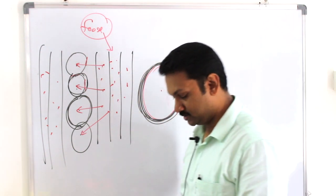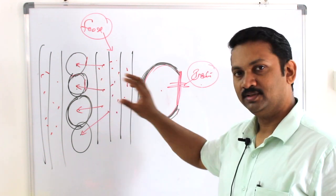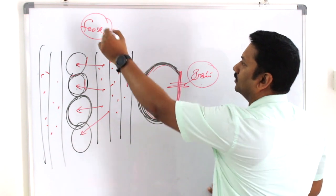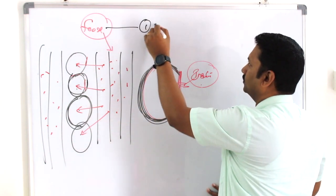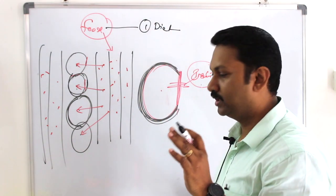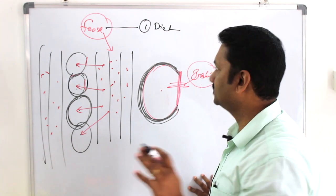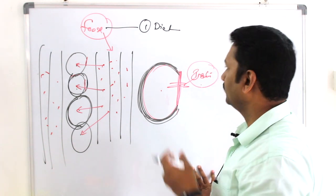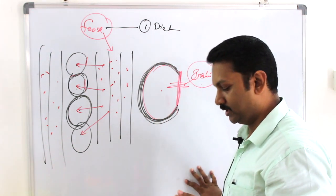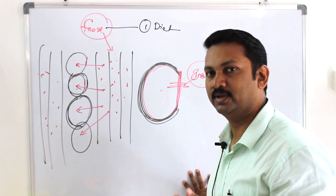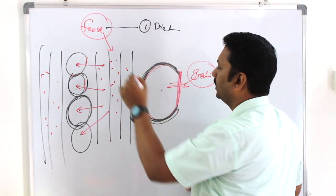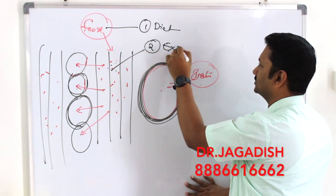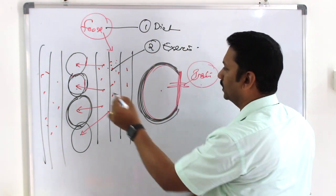The treatment is actually very simple. Number one is diet control — following a strict dietary list. Some foods raise sugar levels fast, some foods register slowly, some foods have slow sugar content — so those foods should be followed. Next, we can reduce sugar by exercise. The third is medicine.